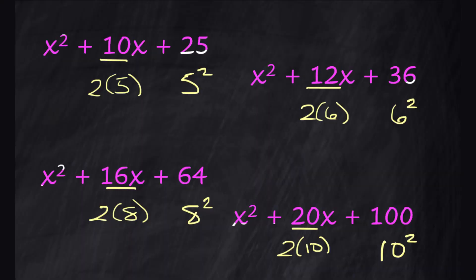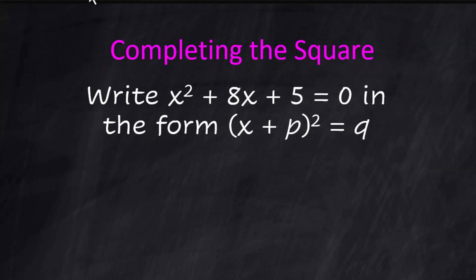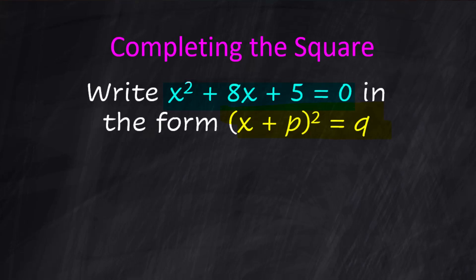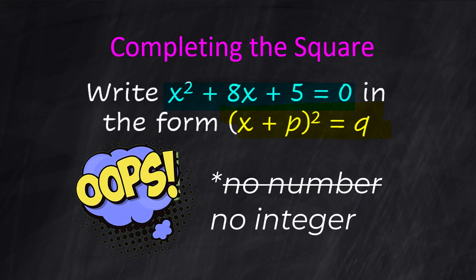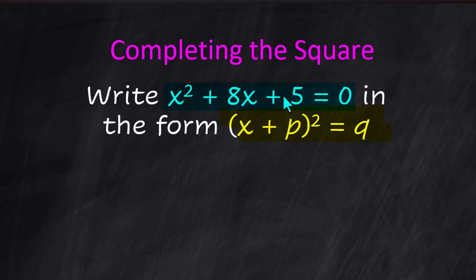Now I'm going to use that pattern. Write x² + 8x + 5 = 0 in the form (x + p)² = q. This is just a general way of saying we want to write this as a perfect square trinomial equal to a constant — p and q are both constants. But right now this is not a perfect square trinomial; there is no number you can multiply times itself to get this 5.